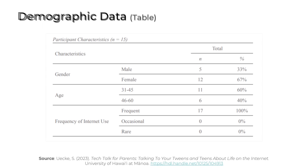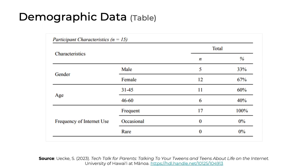First up, we have demographic data. Here you can see a simple APA style table entitled Participant Characteristics, and notice that it says n equals 15. This is useful because the reader knows right away that the data in the table is based on a sample size of 15 participants. The table has four columns: the characteristics themselves — gender, age, and frequency of internet use — then subcategories for each characteristic. For example, gender has two subcategories, male and female, and age has two subcategories as well. Moving to the right, we can see two more columns which list the n or sample size and then the percent of the total. This is a nice, easy-to-read table, and notice that there are no vertical border lines — only horizontal lines, to adhere to APA style formatting.